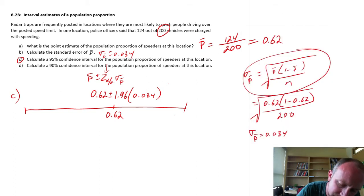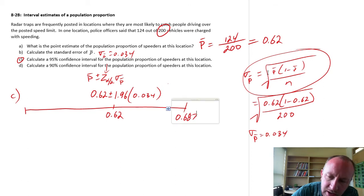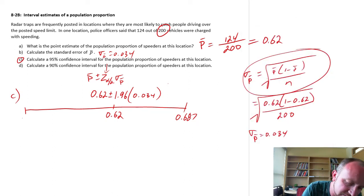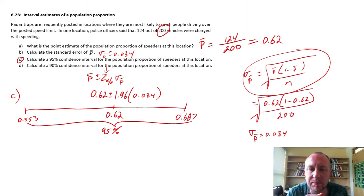So 0.62 plus 1.96 times 0.034, let's call it 0.687. And our point estimate minus the margin of error, 0.62 minus 1.96 times 0.034, so 0.553. I am 95% confident that the true proportion of cars that pass this location who are speeding is between roughly 55% and 69%. That's my interval estimate for that population proportion. We're 95% confident.